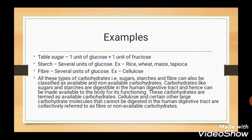Examples of carbohydrates: Table sugar is made up of one unit of glucose and one unit of fructose. Starch is made up of several units of glucose, with examples including rice, wheat and maize. Fiber is also made up of several units of glucose, with an example being cellulose. These types of carbohydrates can be classified into two categories: available and non-available carbohydrates. Sugars and starches are digestible and available to the body, termed available carbohydrates, while cellulose cannot be digested and is referred to as non-available carbohydrates or fibers.